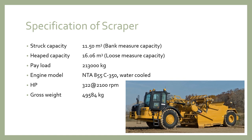Next is the specification of the scraper. Struck capacity according to bank measure volume is 11.50 meter cube, and heap capacity according to loose measure is 16.06 meter cube. Payload is 13,000 kg. Engine model is NTA 855 C 350, and flywheel horsepower is 322 at 2100 rpm. The gross weight of this scraper is 49,584 kg.